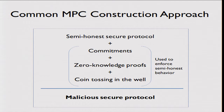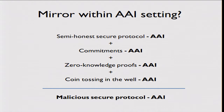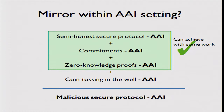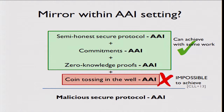Shifting to the construction: a common approach for constructing MPC protocols is to start with a weaker protocol secure against semi-honest adversaries — those assumed to follow the protocol honestly but who may combine information among parties — and then add components to enforce that parties actually act semi-honestly. The question is whether we can mirror this approach in our setting: if we get each piece individually secure against adaptive auxiliary information, can we compose them?